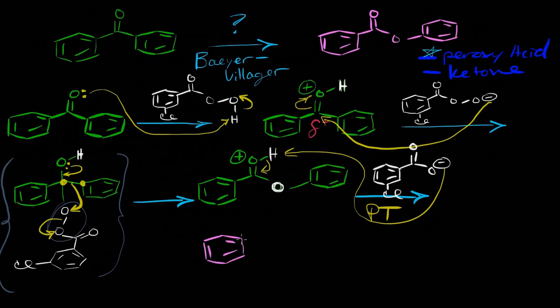So now what do we have? Well, as our product, we didn't really change anything on the left, so we just keep that benzene part there. We've added that oxygen, and our benzene group on the right just was bumped down one. And this would be our whole entire mechanism for the Baeyer-Villiger reaction.